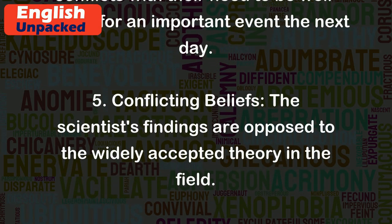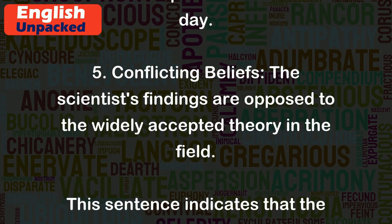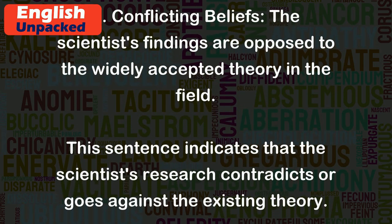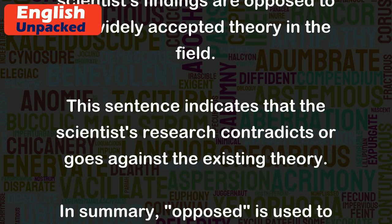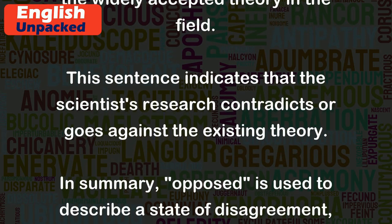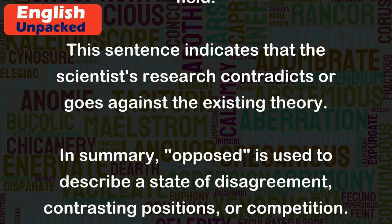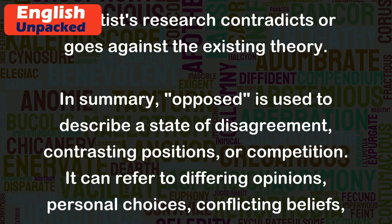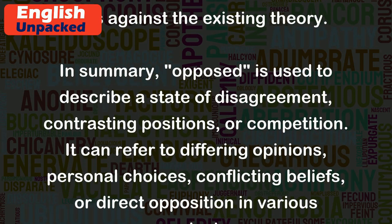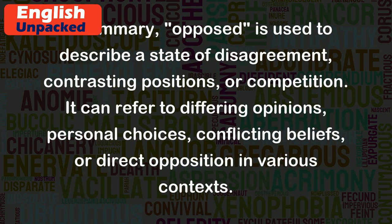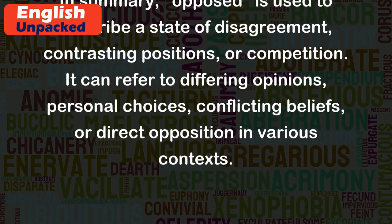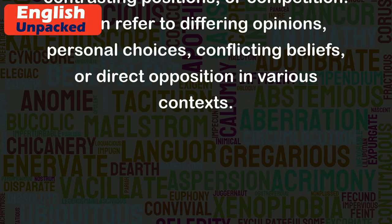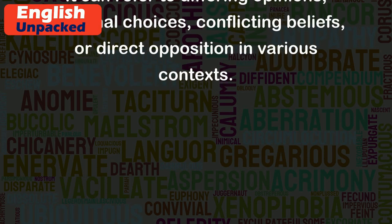Five. Conflicting beliefs: The scientist's findings are opposed to the widely accepted theory in the field. This sentence indicates that the scientist's research contradicts or goes against the existing theory. In summary, 'opposed' is used to describe a state of disagreement, contrasting positions, or competition. It can refer to differing opinions, personal choices, conflicting beliefs, or direct opposition in various contexts.